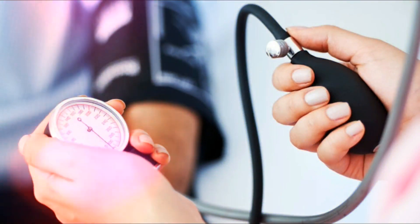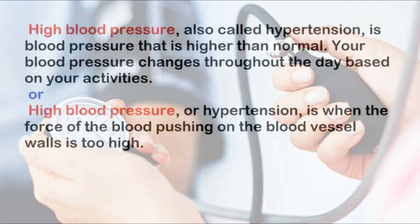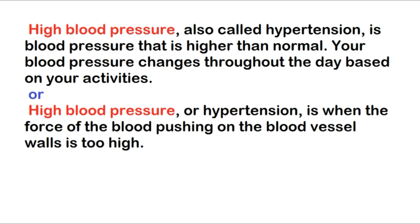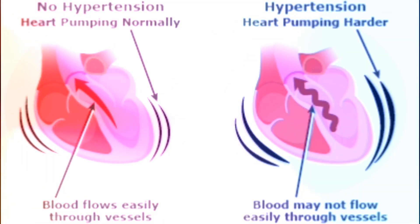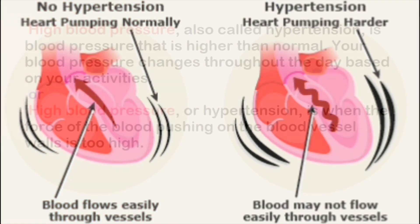Welcome to my channel, watch and learn. In this video we will talk about high blood pressure or hypertension. High blood pressure is a disorder of the circulatory system. Blood pressure is the amount of force exerted by blood against the walls of the arteries. If the blood pressure of a person remains above the normal value of 120 over 80, the condition is called high blood pressure or hypertension.